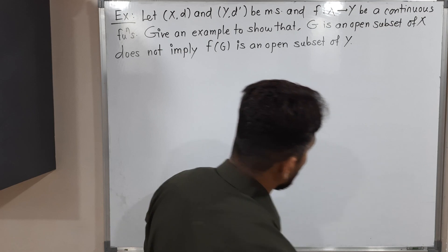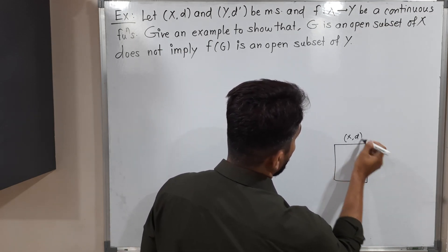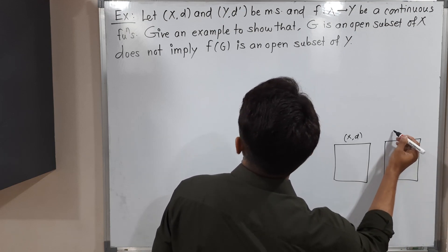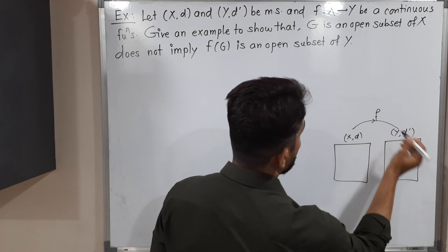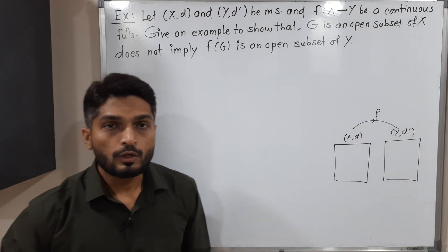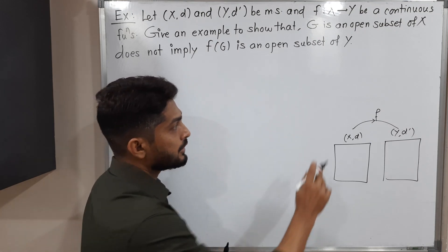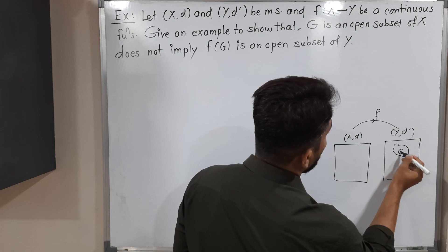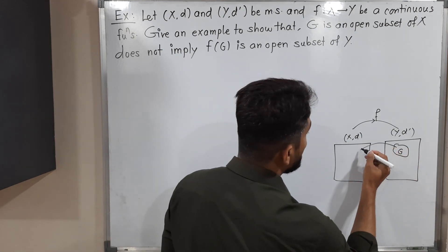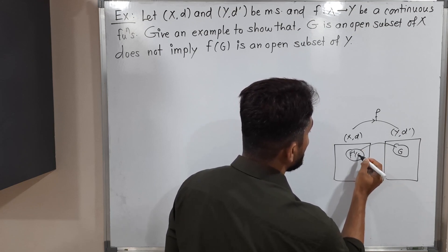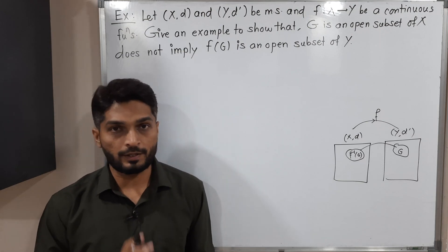So let me show here. Suppose we have metric space Xd and another metric space Yd-dash, with a function f from X to Y. We have seen one result: if f is continuous and G is any open subset of Y, then its inverse image f⁻¹(G) is an open subset of X. This result we have already seen in our previous video.